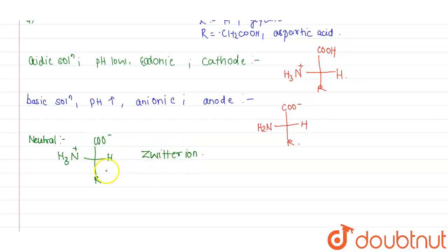Moreover, at this point the pH is known as pI and it is known as isoelectric point. At this point no migration occurs.